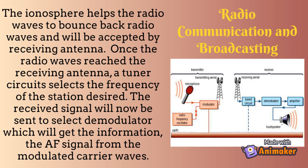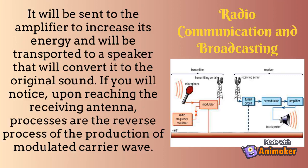Once the radio waves reach the receiving antenna, a tuner circuit selects the frequency of the desired station. The received signal is sent to a demodulator, which extracts the audio signal from the modulated carrier waves. It is then sent to an amplifier to increase its energy and transported to a speaker that converts it back to the original sound. Upon reaching the receiving antenna, the processes are the reverse of the production of the modulated carrier wave.